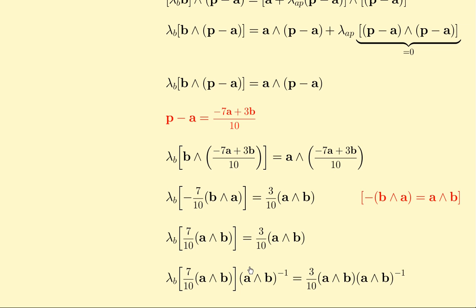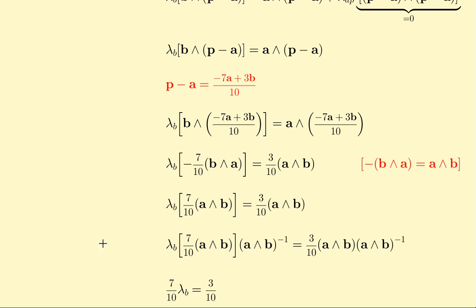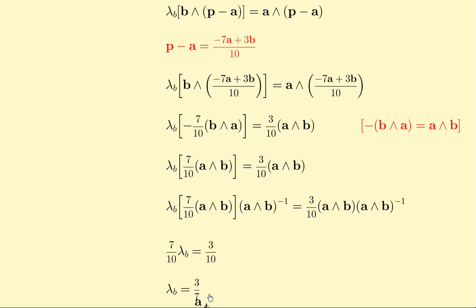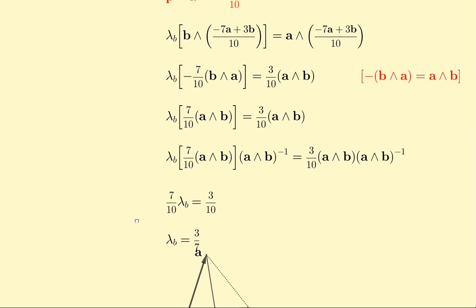...is multiply both sides by the multiplicative inverse of A wedged B. That eliminates A wedged B on both sides, and then we come up with seven-tenths lambda_B is three-tenths, from which lambda_B is three-sevenths.